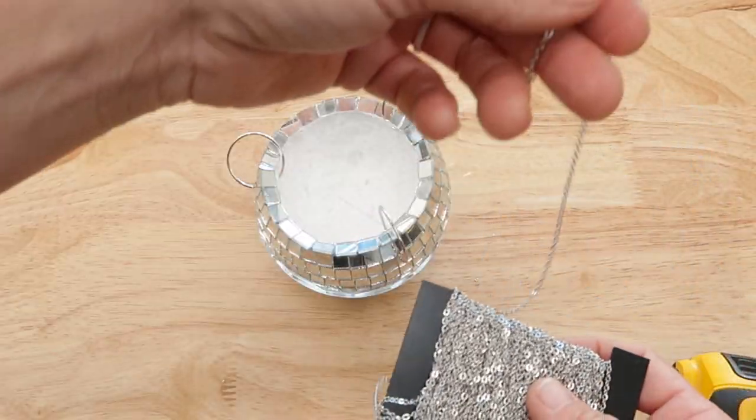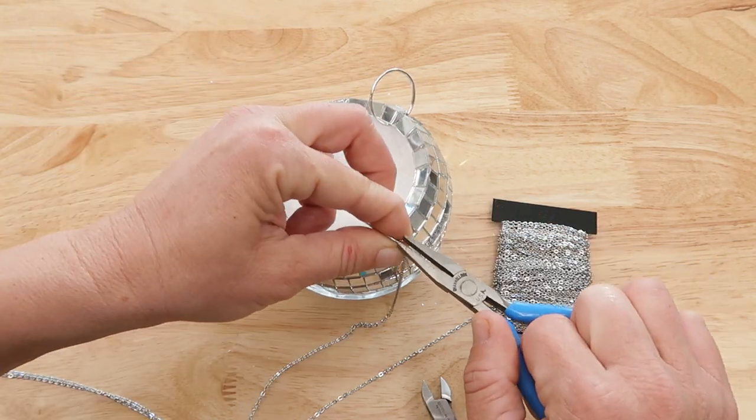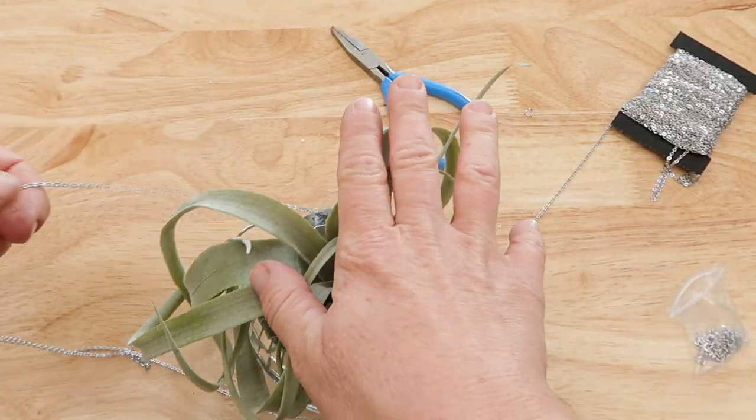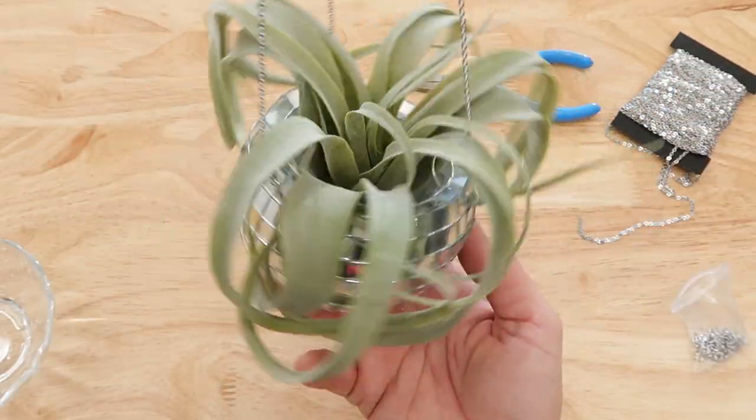I found this on Amazon, but of course you could find it probably at a jewelry store or craft store. And just used smaller jump rings to attach it to the larger jump rings. Once the plant was in, it was just time to see how it looked.